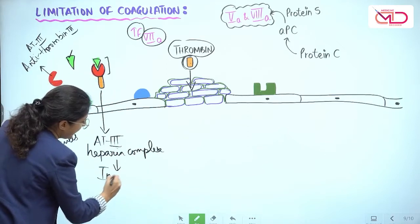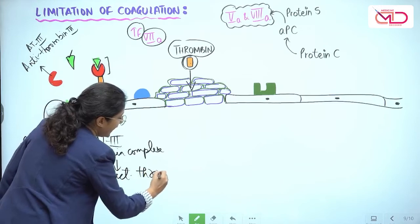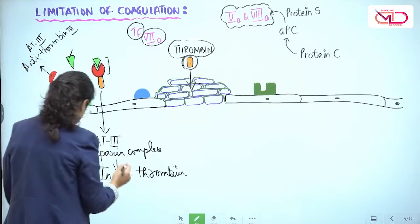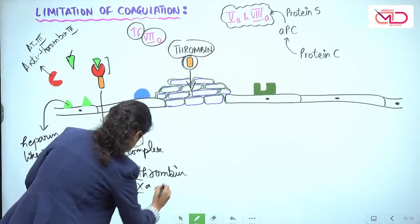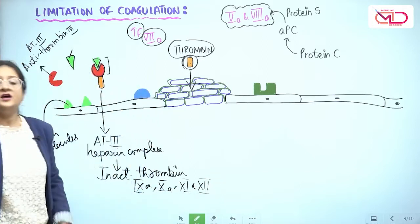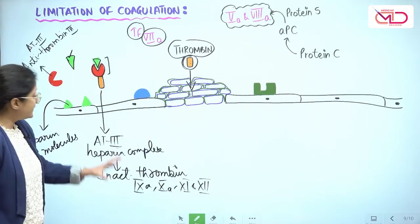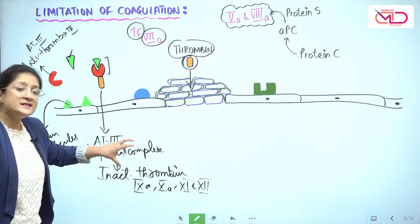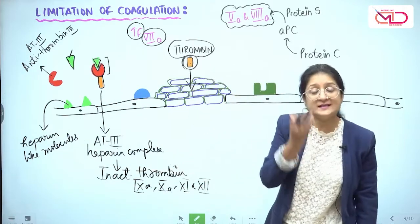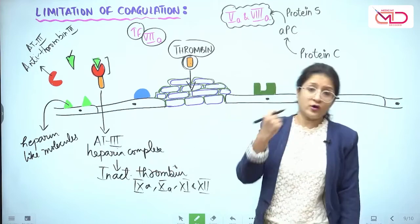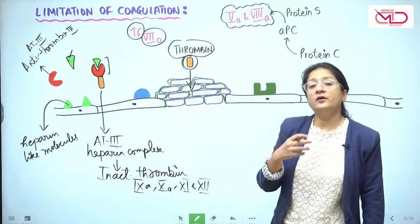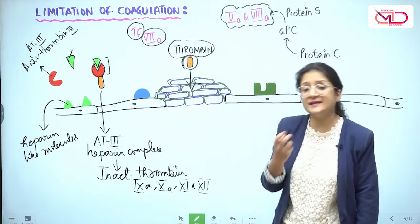This antithrombin 3 and heparin complex inactivates thrombin, and not just thrombin — it also inactivates other activated factors of the coagulation cascade like factor 9a, factor 10a, factor 11, and factor 12 as well. This important physiological information has been used to determine the utility of heparin-like molecules — synthetic heparin — in inhibiting coagulation. This is where heparin gets its pharmacological role.